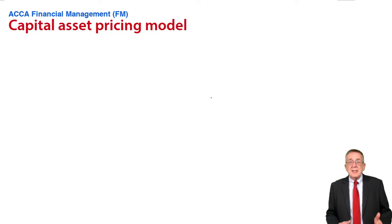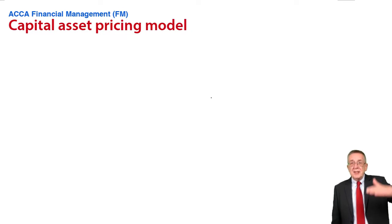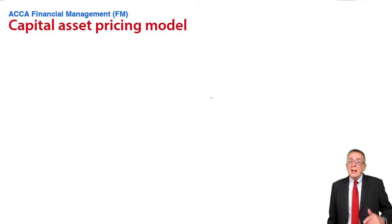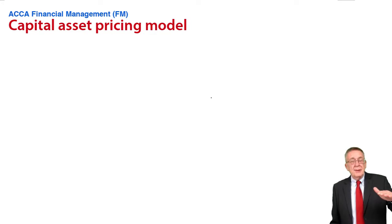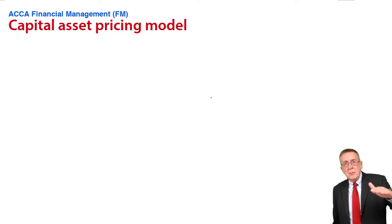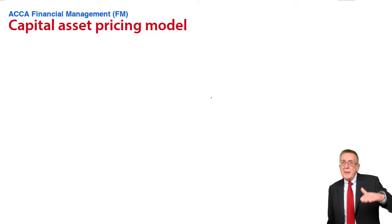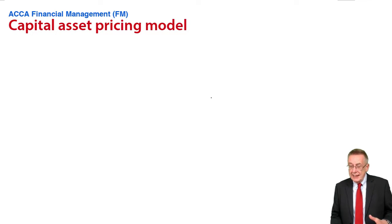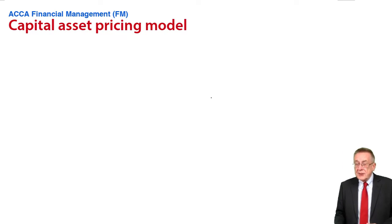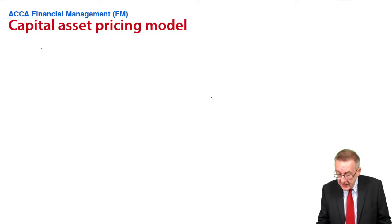Some businesses are inherently more risky. The profits might go up, might go down a lot. Other businesses, the profits are much more predictable, they don't vary as much. We say they're less risky. And so we're talking about what we call the business risk.